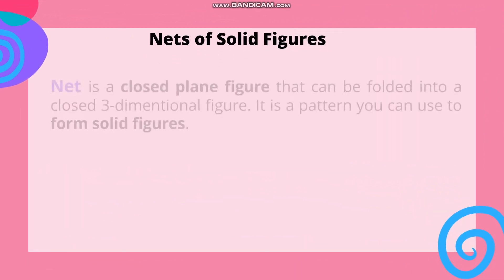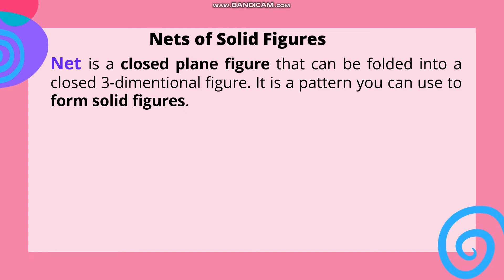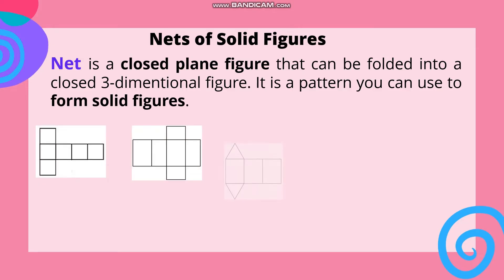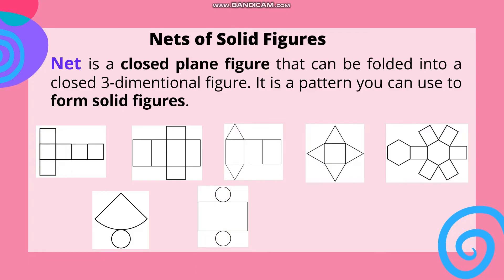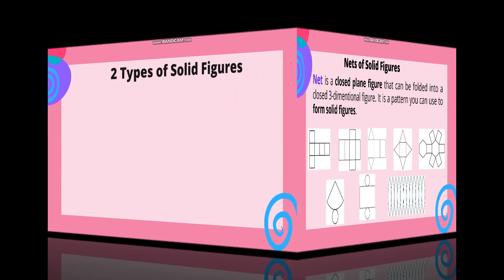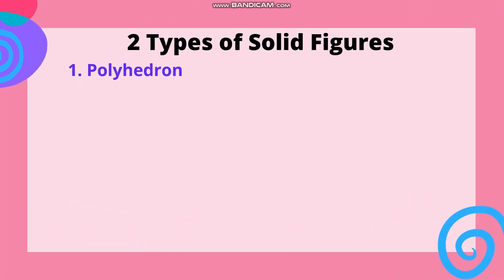Nets of solid figures. A net is a closed plane figure that can be folded into a closed three-dimensional figure. It is a pattern you can use to form solid figures. Ang net ng solid figure ay ang diagram na ikinukulit sa papel. Kapag ito ay ginupit at itinupi ayon sa mga linya, makakabuo tayo ng solid figure. The following diagrams show nets of a cube, rectangular prism, triangular prism, square pyramid, hexagonal prism, cone, cylinder, and sphere.